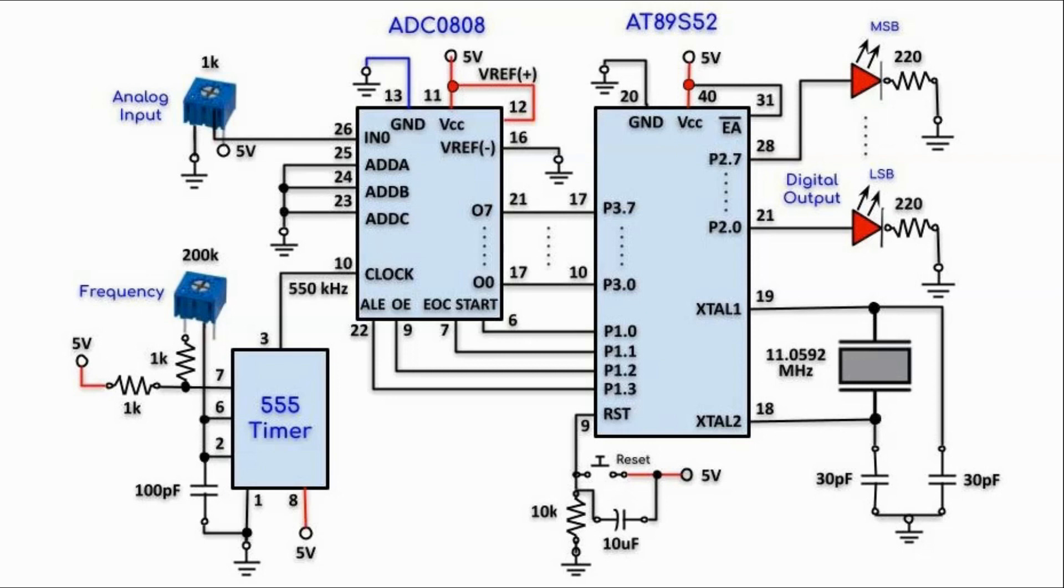This is a circuit diagram of the implemented system. As you can see, the clock signal is generated using this 555 timer circuit to give us this 550 kHz clock signal. The address lines A, B, C have been grounded so that we enable analog input 0, and the analog input is fed through this 1k pot.